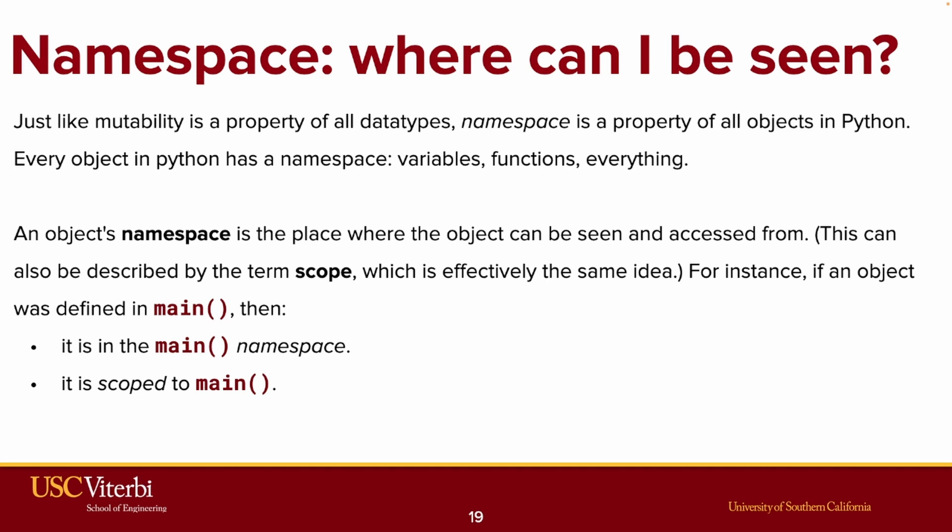So for instance, if an object was defined in main, then it is in the main namespace. You could also say that it is scoped to the main function.